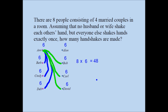Let me explain. When I count the handshake between Ann and Bob as Ann's handshake, that same handshake was also counted as Bob's handshake with Ann. So each handshake was counted exactly twice. For example, the handshake between Ann and Deb was counted in Ann's six and also in Deb's six. So 48 cannot be the right answer. The final answer is 48 divided by 2, which is 24.